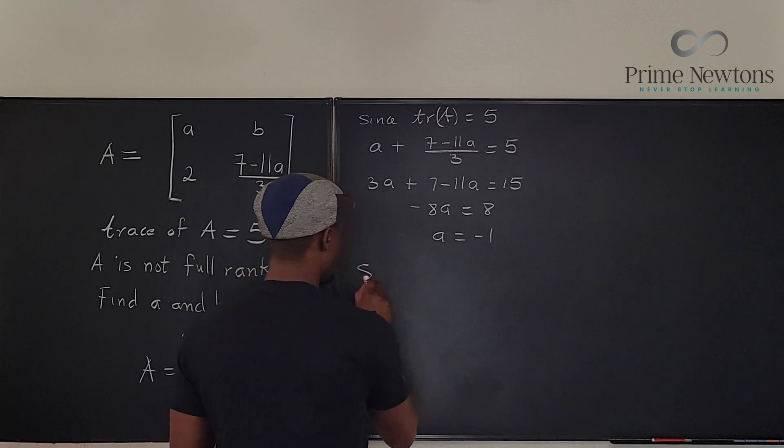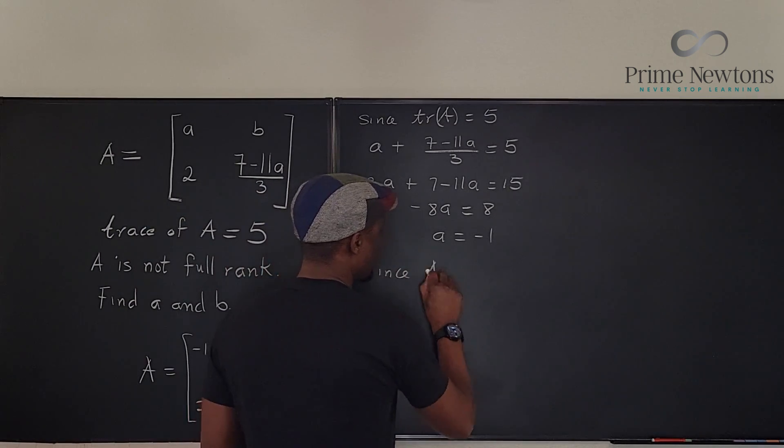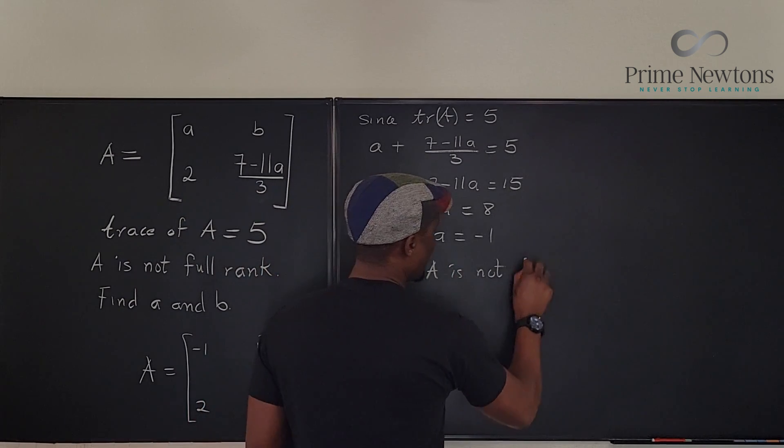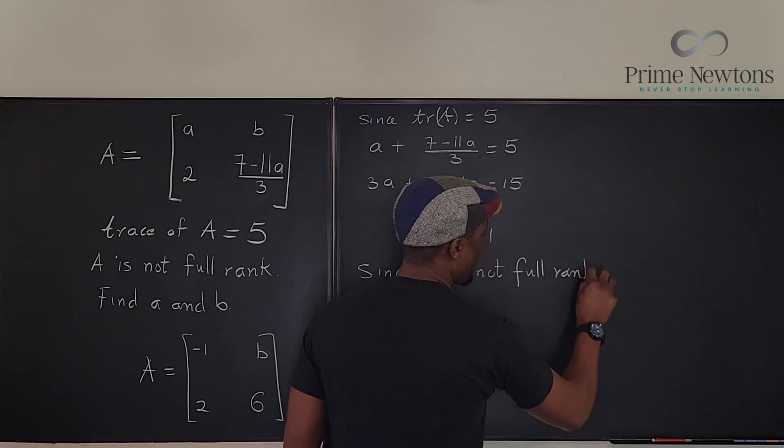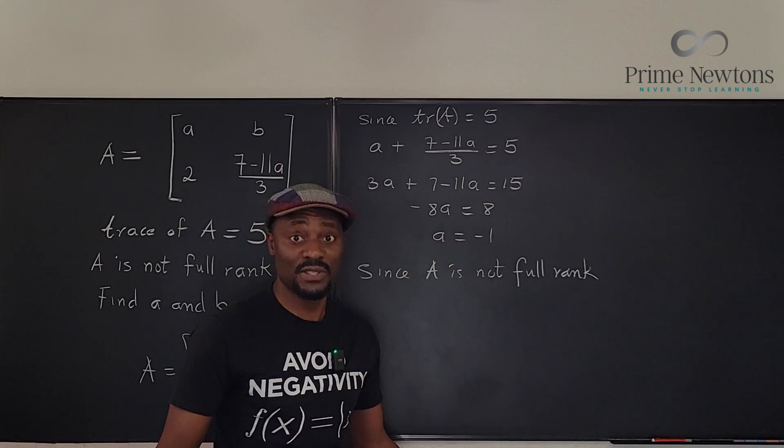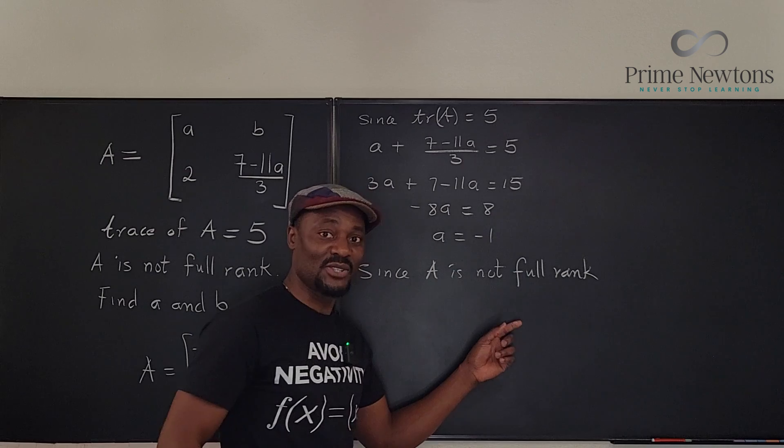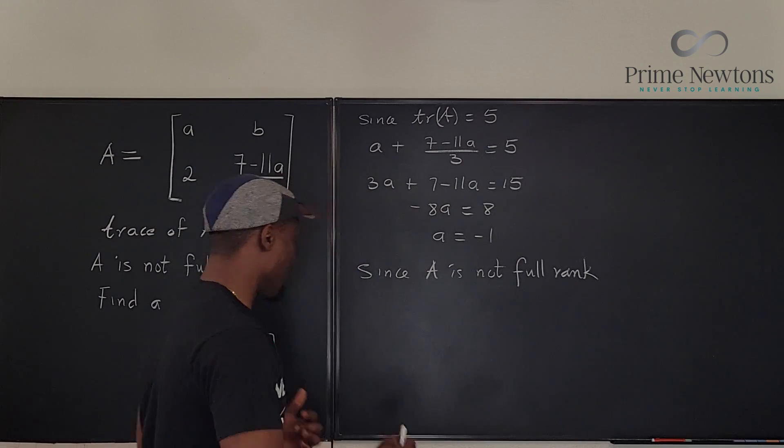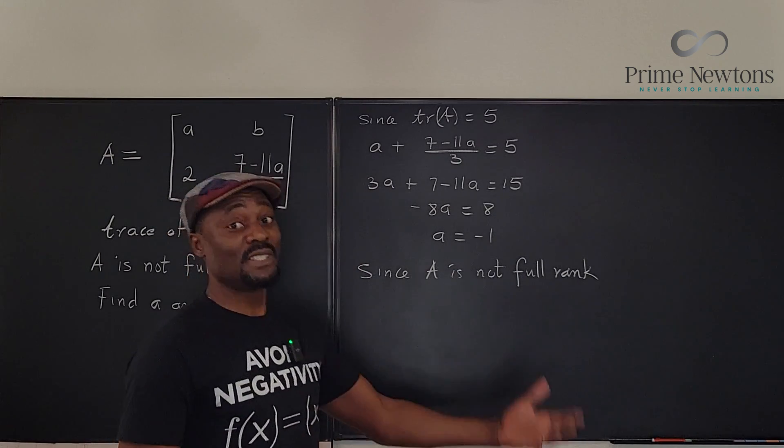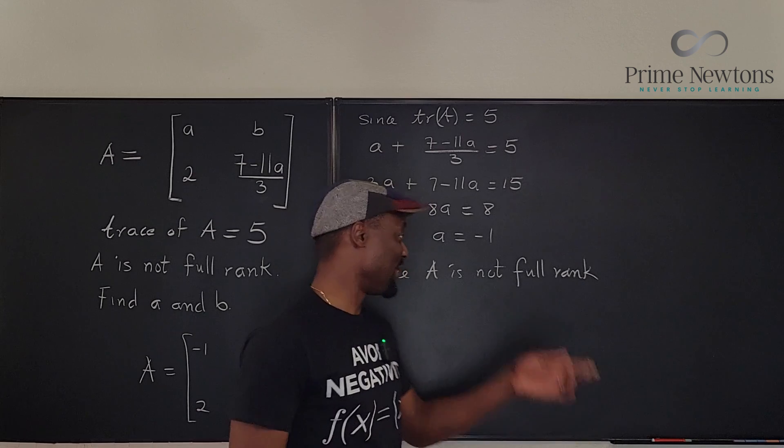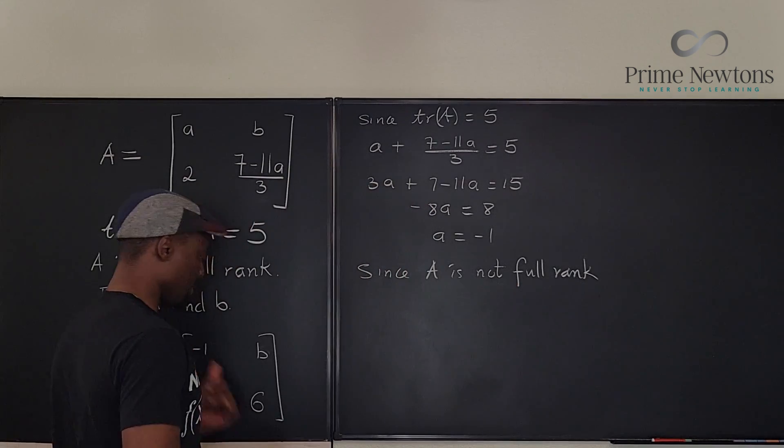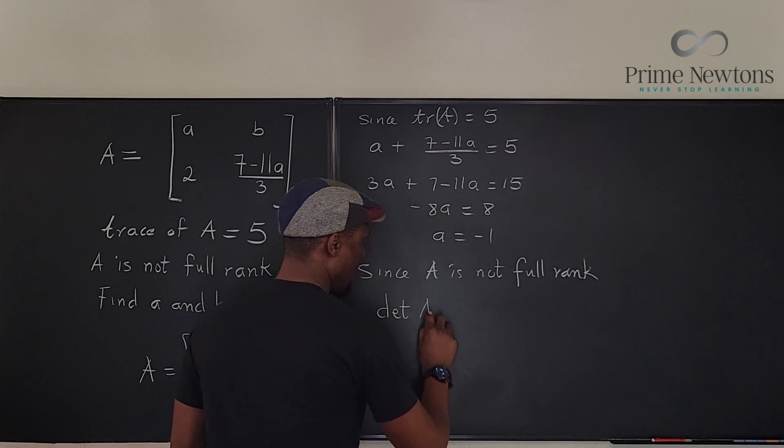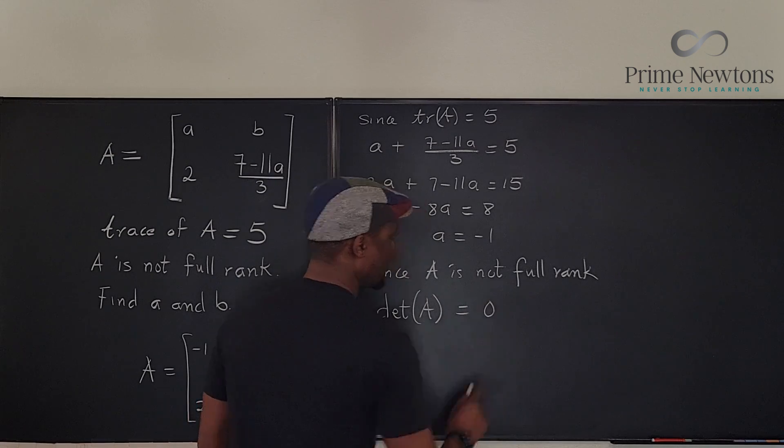So we know since a is not full rank. What I forgot to say: it is not invertible. And this is the implication. If it is not invertible, then the determinant is equal to zero. Or if the determinant is zero, it is not invertible and it is not full rank. Here we're going to multiply and say the determinant of a is equal to zero.